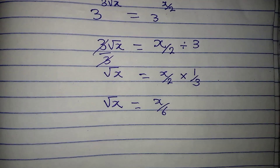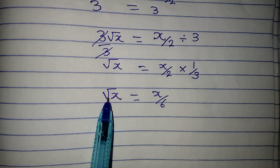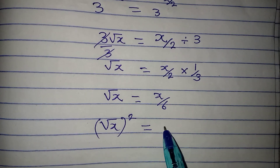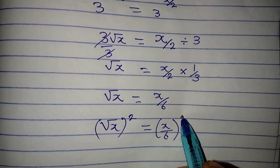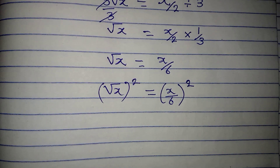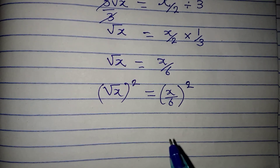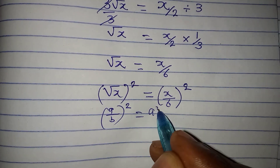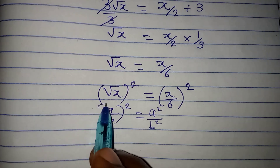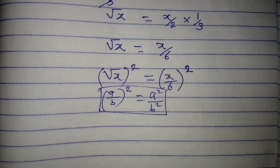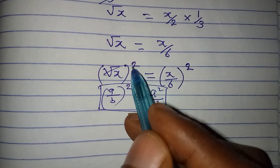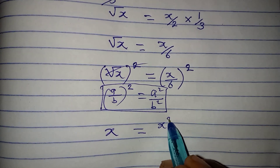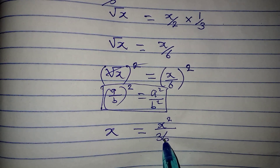Now it's time to remove the square root by squaring both sides. We have square root of x, squared, equals x over 6, all squared. The square root and square cancel each other. For the right side, a over b squared equals a squared over b squared, so we get x equals x squared over 36.